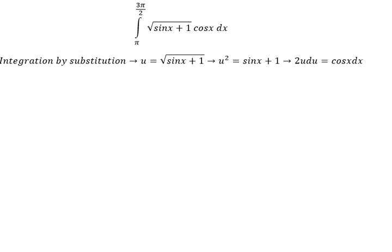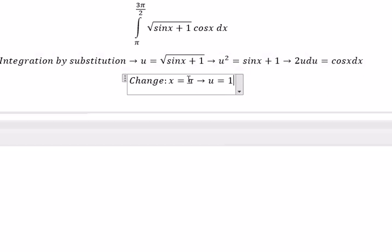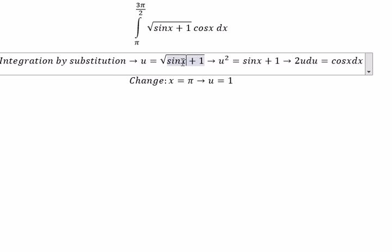Next, we need to change the bounds. If x equals π, then u equals 1. Because we put π in here, that's why you get the value of u equals 1.